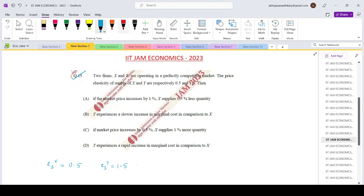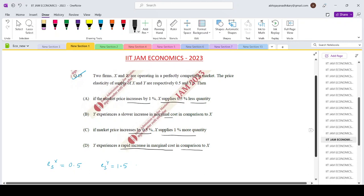Then we have to check the options. If the market price increases by 1%, X supplies 0.5% lesser quantity. If Y experiences a slower increase in marginal cost compared to X. If market price increases by 0.5%, X supplies 1% more. And the fourth option is Y experiences a rapid increase in marginal cost in comparison to X.